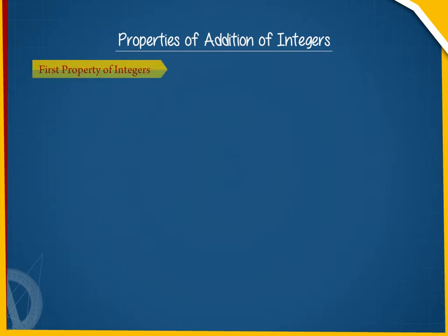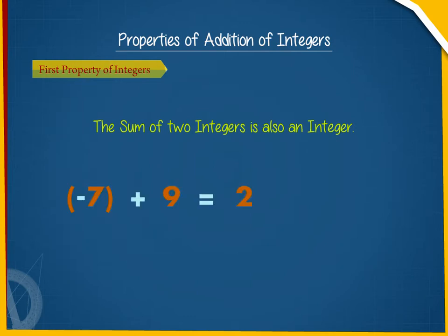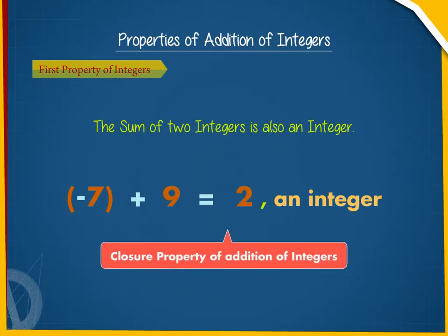The first property says that the sum of two integers is also an integer. For example, minus 7 plus 9 is equal to 2, an integer. This is known as the closure property of addition of integers.